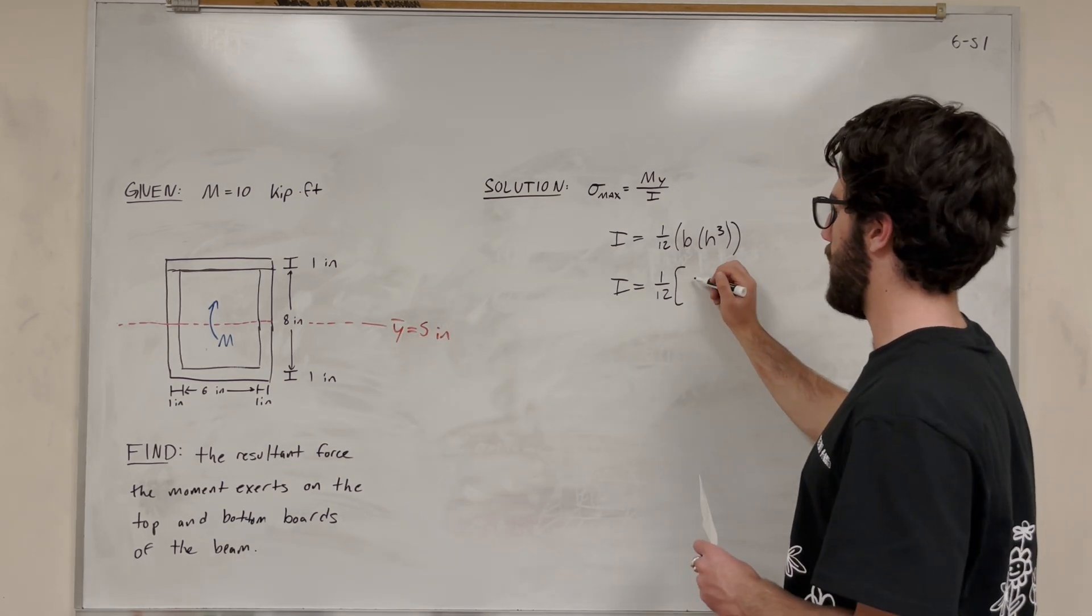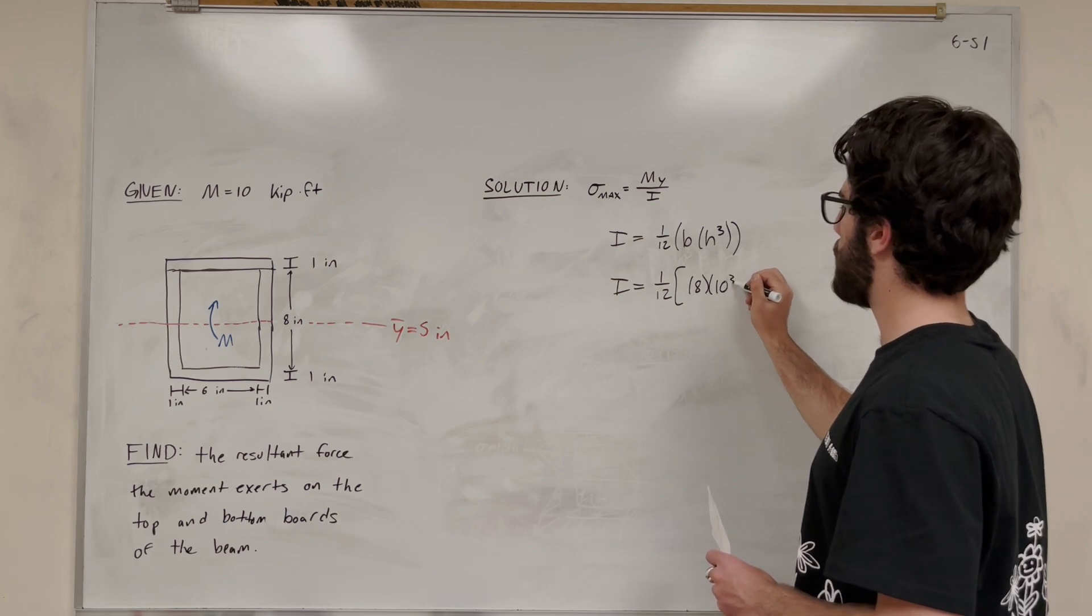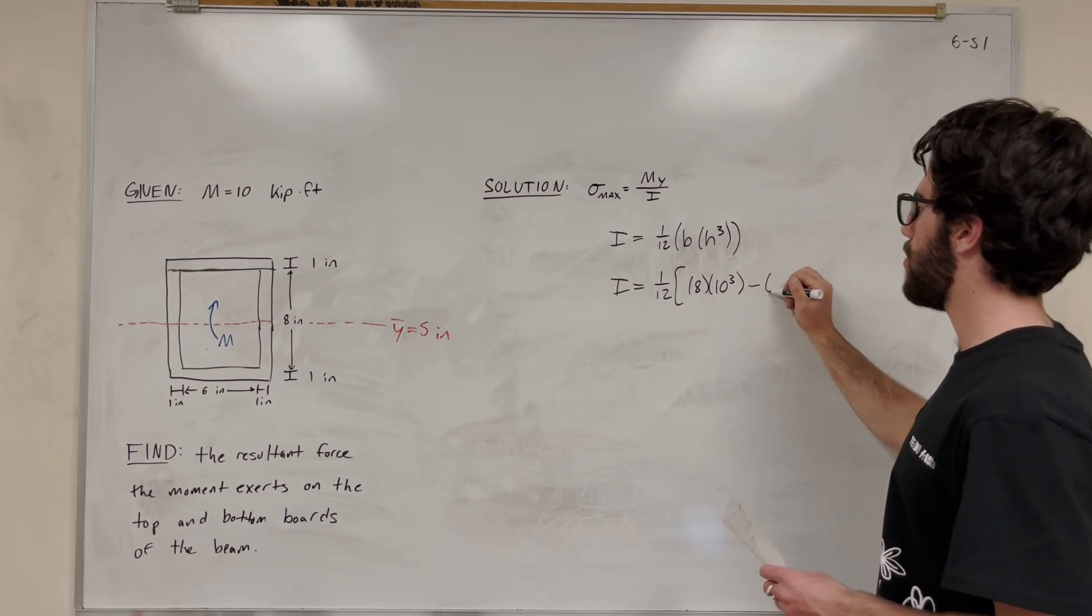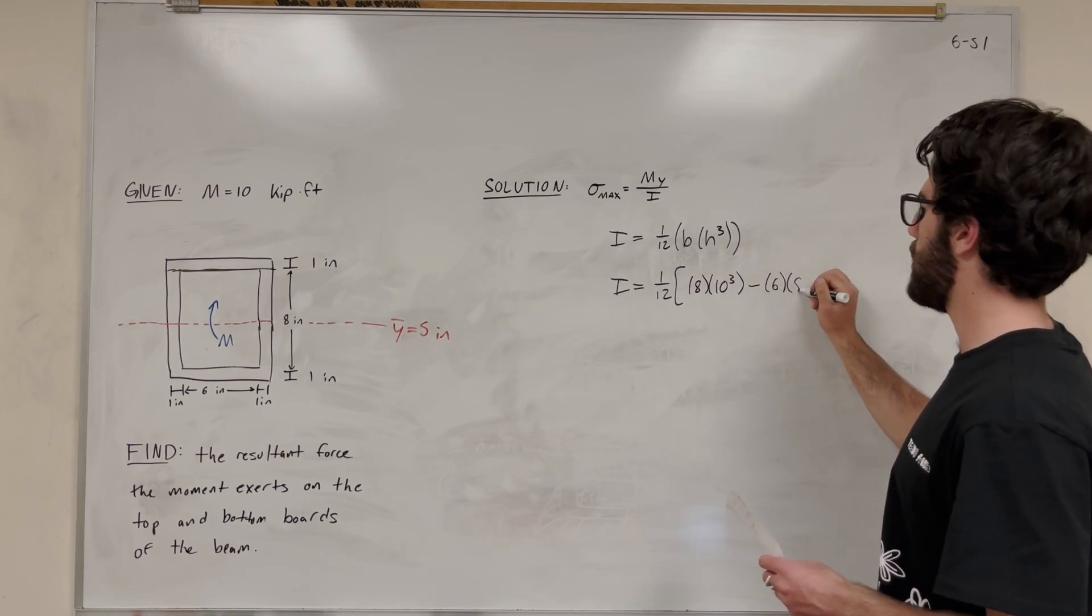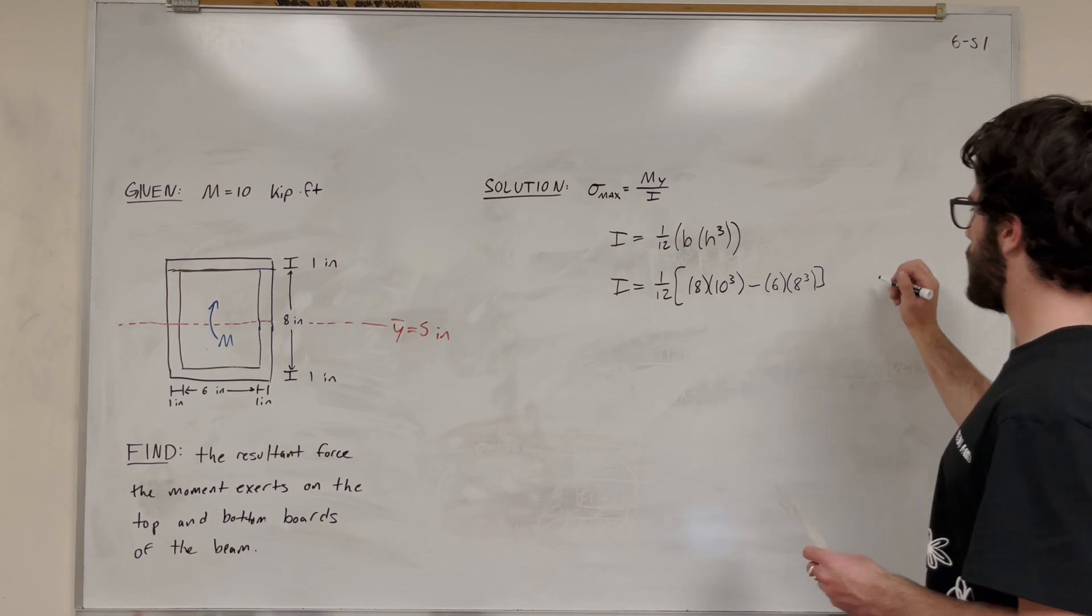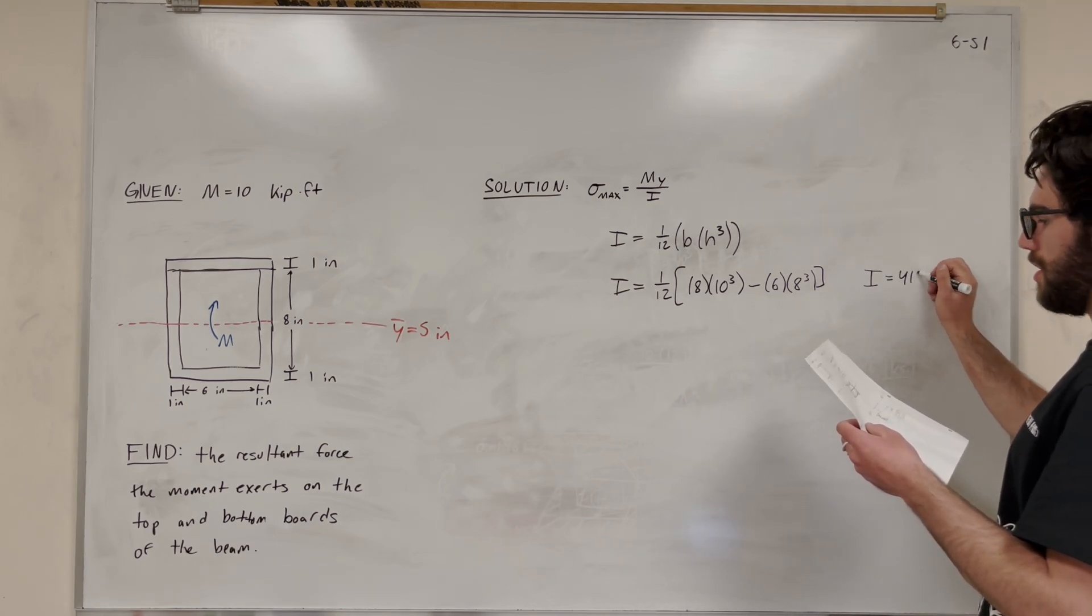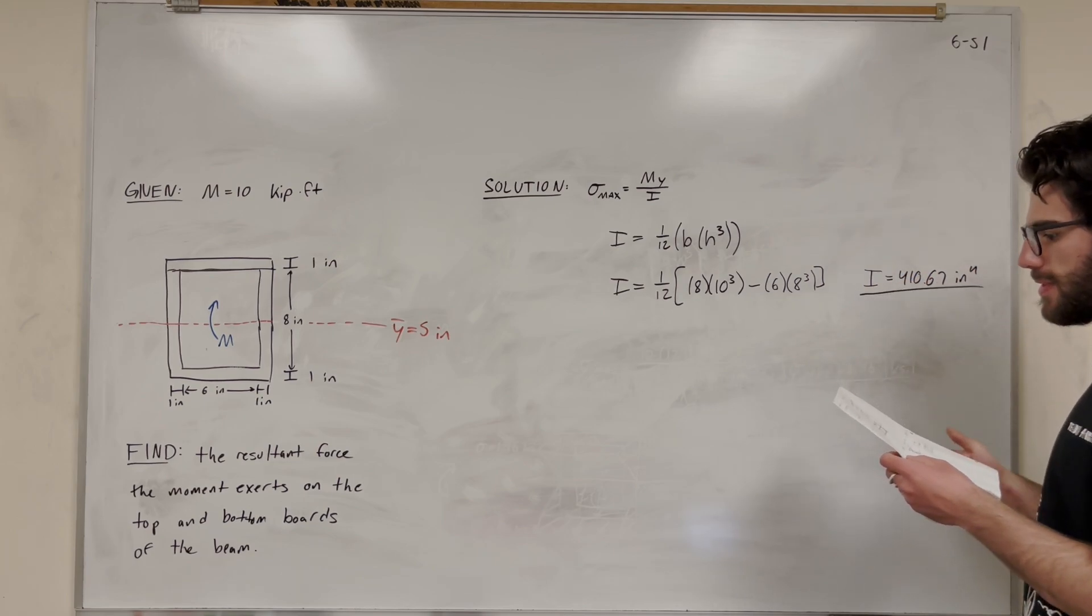The whole rectangle has a base of 8 inches and height of 10 inches. Then we subtract the moment of inertia of the inner one, which has a base of 6 and height of 8. Then we find that this moment of inertia equals 410.67 inches to the fourth.